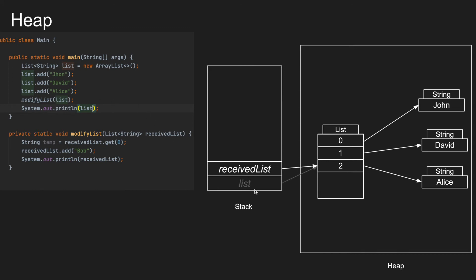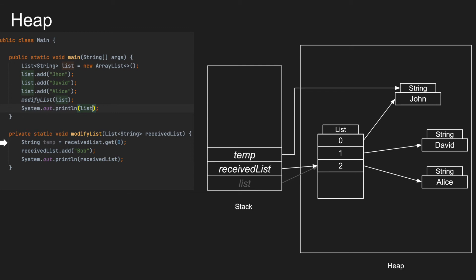As said earlier, whenever we enter into a new function, the old variables pushed into the stack go out of scope. Executing the first line of the modifyList function, a temp variable is created inside the stack pointing to a string object. We are retrieving the 0th index and assigning its value to the temp variable, which points to the 0th index of the list. The string object is now pointed to by both the 0th index of the list and the temp variable.